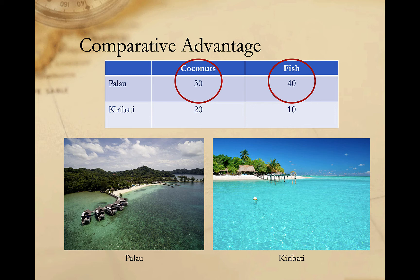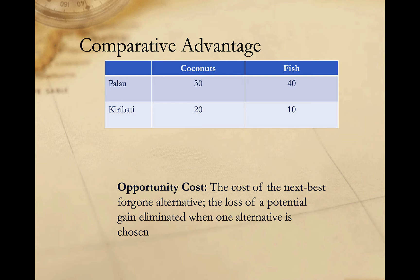To understand why comparative advantage works, we need to first understand the concept of opportunity cost. In economics, opportunity cost refers to the cost or benefit of what you give up when you make a choice — the loss of a potential gain eliminated when one alternative is chosen. The opportunity cost of attending class is whatever you might have done otherwise: watching TV, hanging out with friends, sleeping, eating. The opportunity cost of going out to dinner is what you could have spent the money or time on instead. Opportunity cost reflects the relationship between scarcity and choice, and it's a central principle of economics.